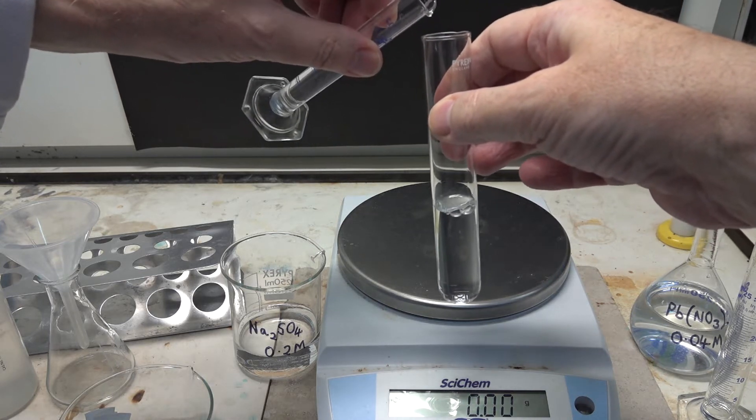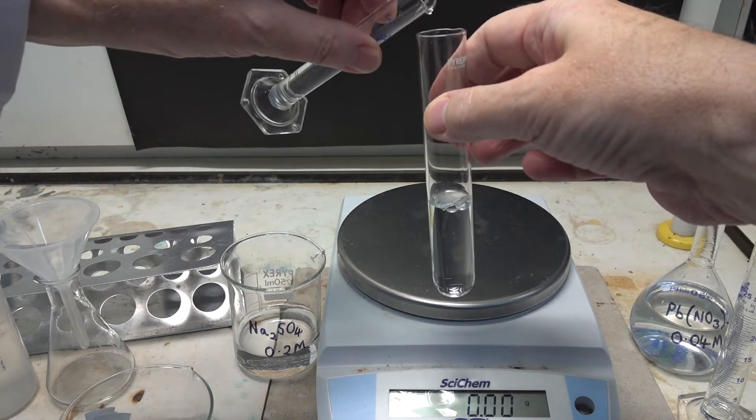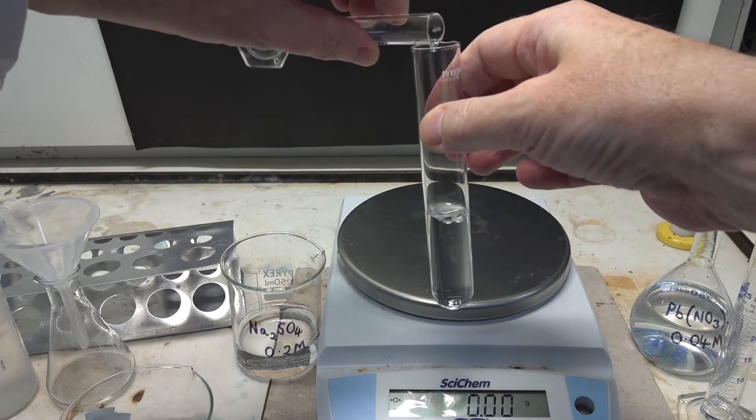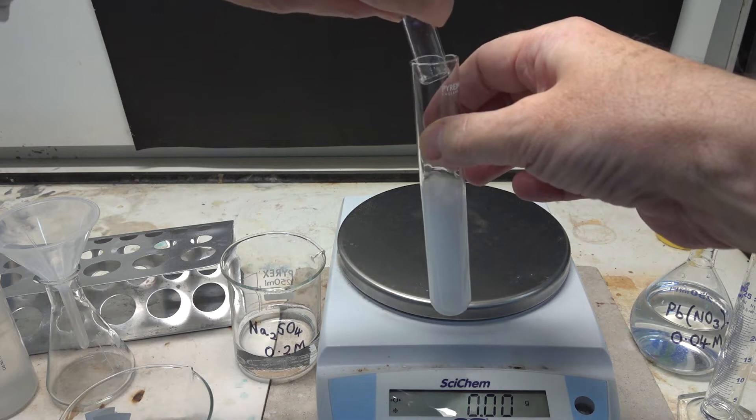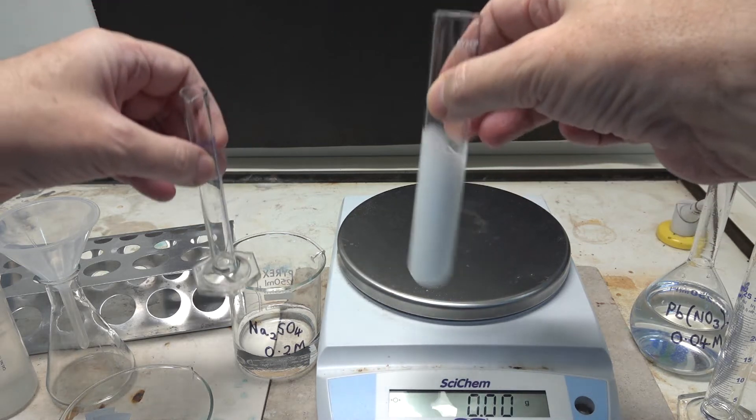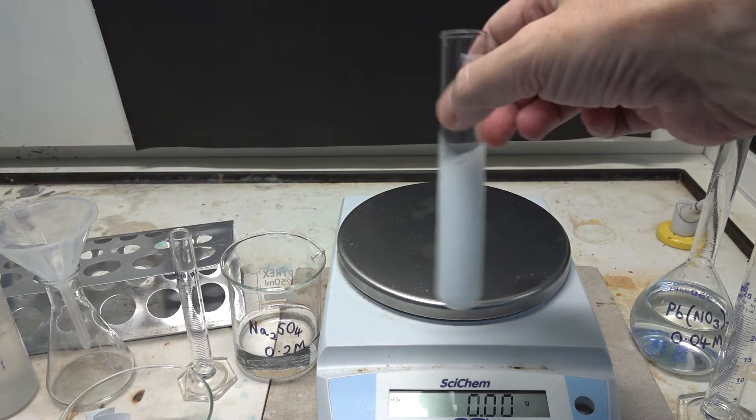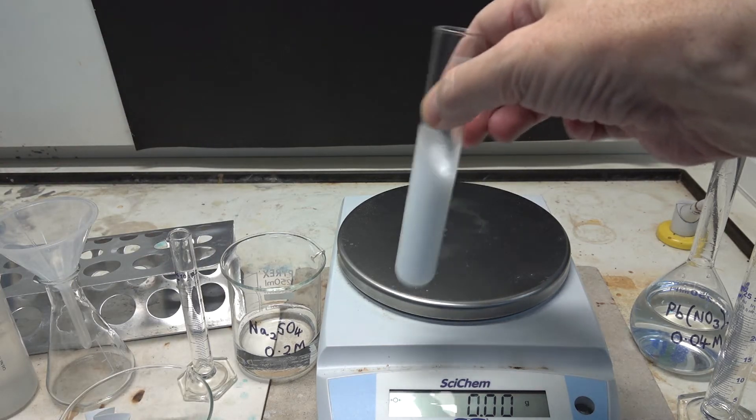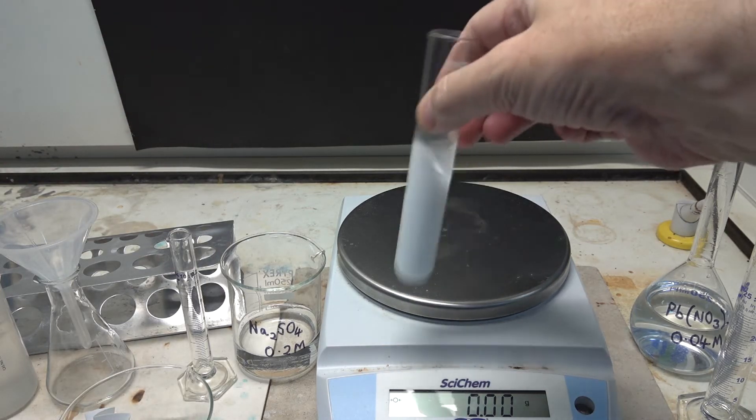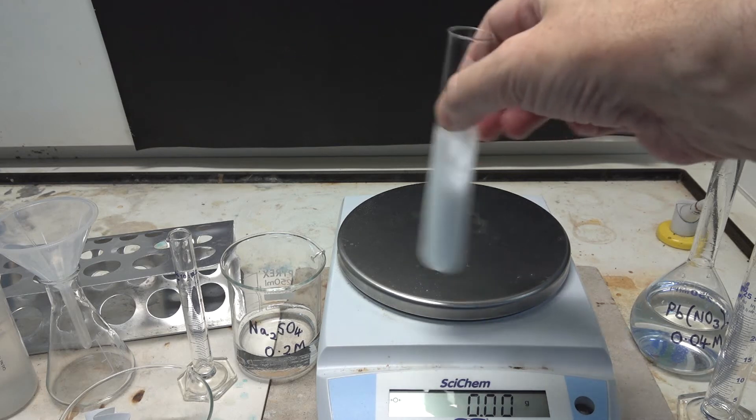So here's the reaction between sodium sulfate and lead 2 nitrate. As you can see, a white precipitate is immediately formed. We'll just give them a swirl to make sure that they're well reacted together there.